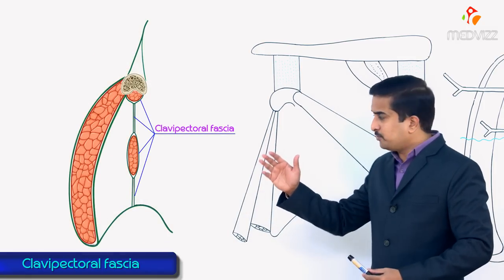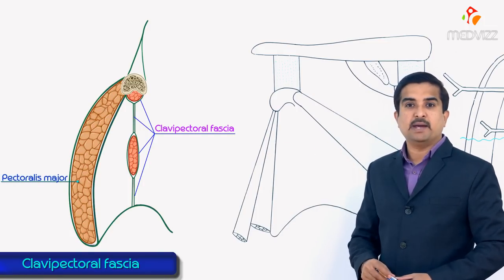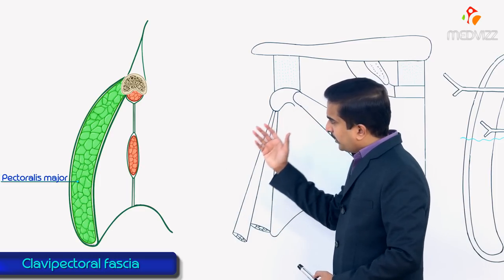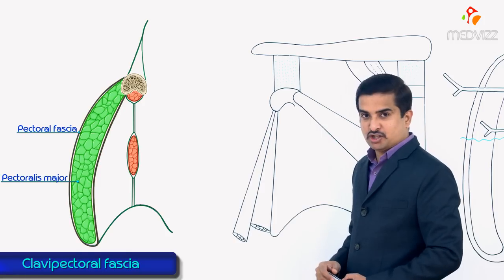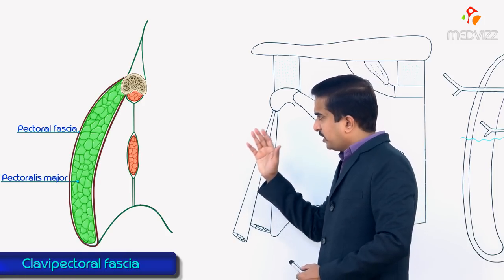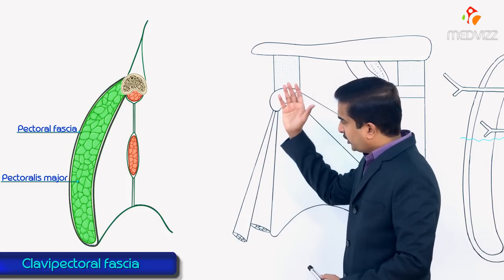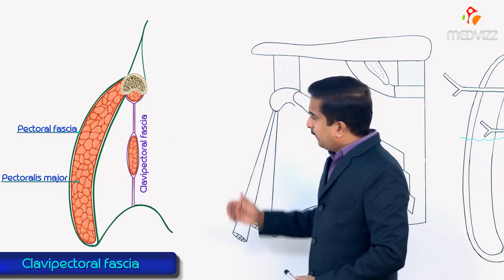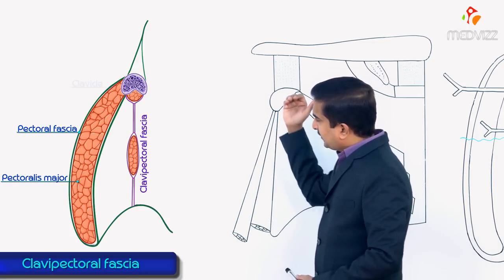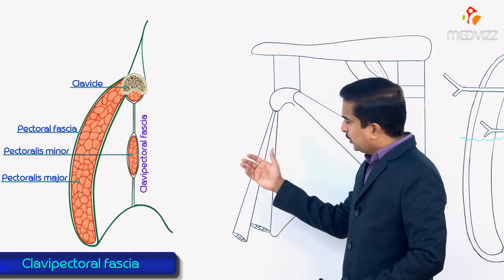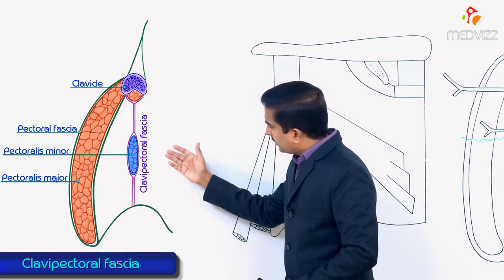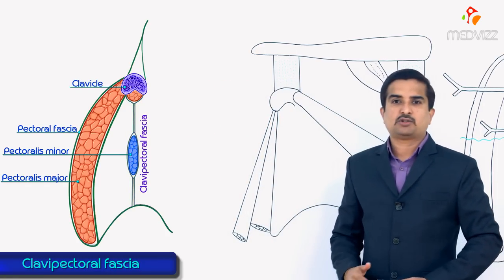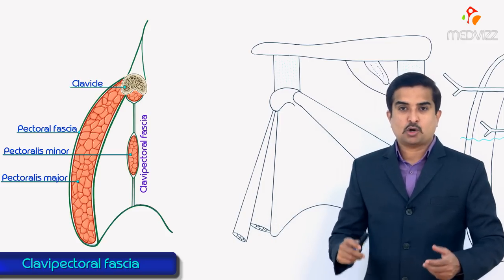This fascia lies deep to the clavicular head of the pectoralis major muscle. The pectoralis major muscle is enclosed by the pectoral fascia, and exactly posterior to the pectoral fascia is the clavipectoral fascia. This fascia fills the gap between the clavicle above and the pectoralis minor below.